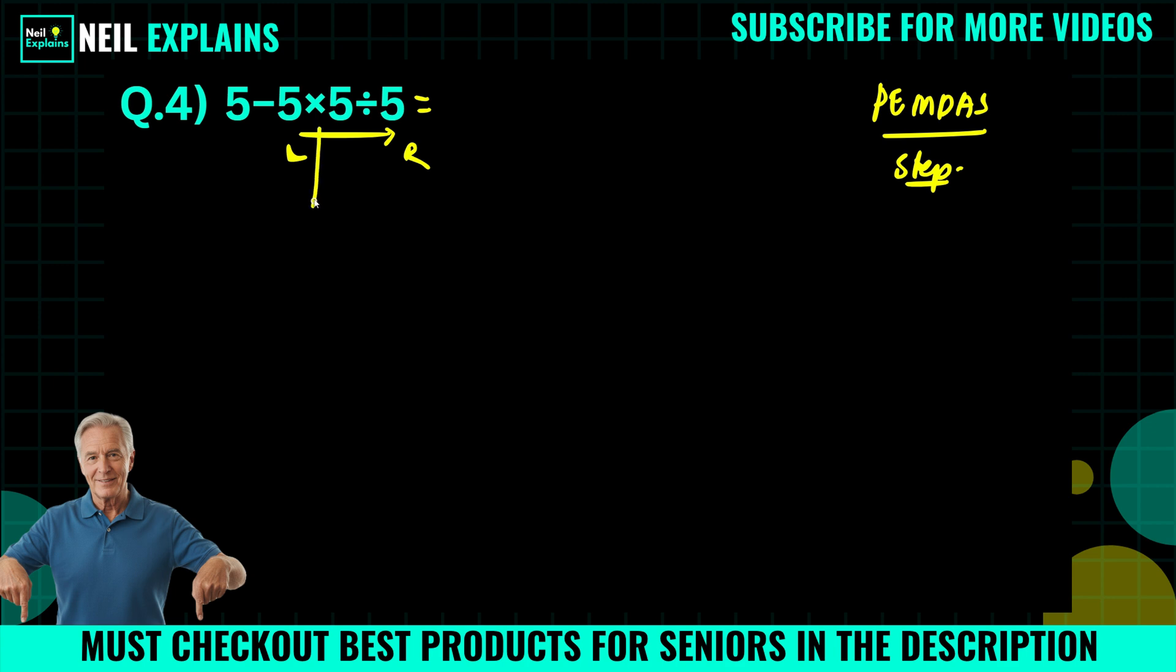So first we will operate this 5 times 5, which equals to what? 25. So we will rewrite our question here: 5 minus 25 divided by 5.